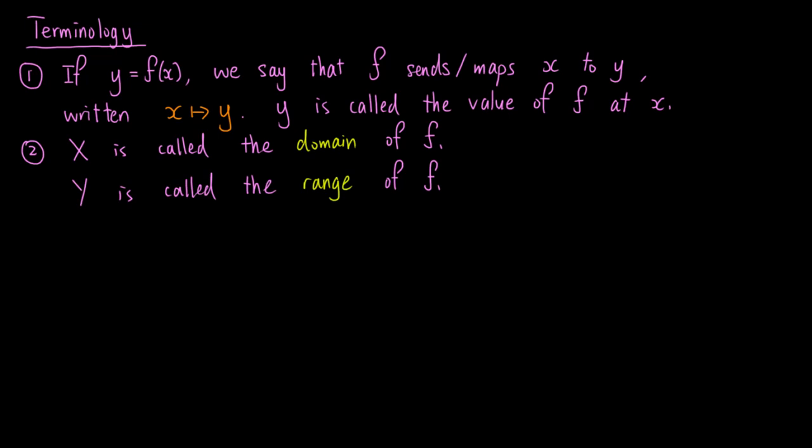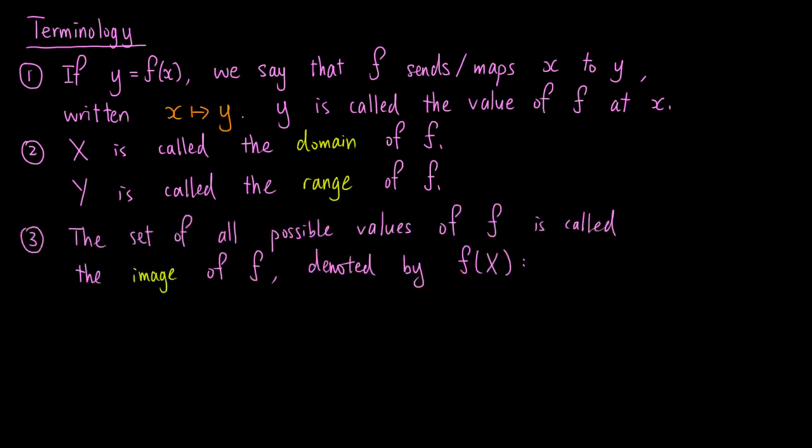It represents the set to which all values of f belong. Thirdly, the set of all possible values of f is called the image of f, denoted by f of capital X. Formally, f of capital X is the set of f of little x, such that little x lies in set capital X, and this is clearly a subset of y.